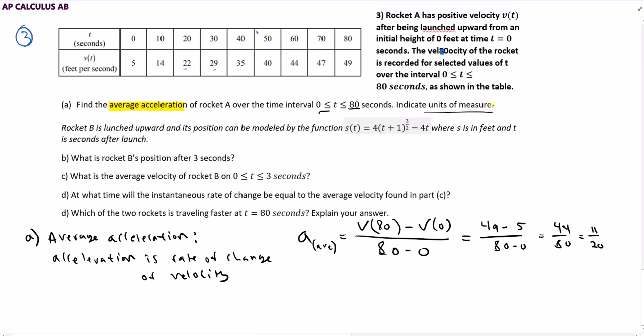Don't forget, we need to indicate units of measure. Think about what units I used to calculate this top number. I was using these numbers, which are in feet per second. And what numbers did I use to calculate my 20? My 20 was calculated using these numbers up here, which are measured in seconds. So I have feet per second per second, which another way of saying that is 11 over 20 feet per seconds squared. And that is my average acceleration over that interval.